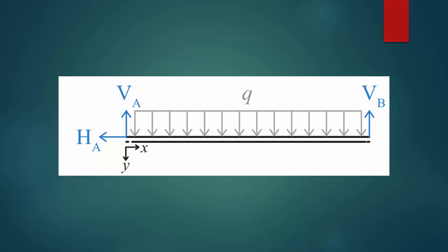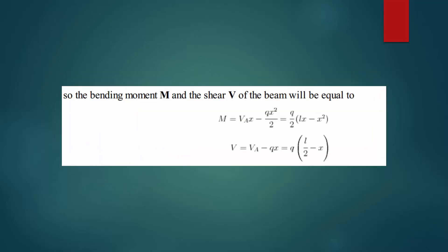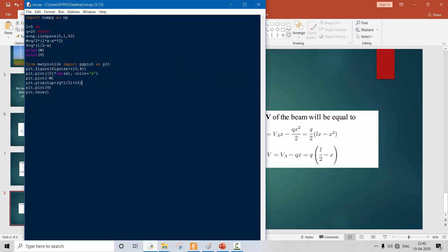To draw the bending moment and shear force diagrams, we need to find values at each point. The shear force equation is V equals VA minus Q*x, which gives V equals QL/2 minus Q*x. The bending moment equation is M equals (Q/2)*(L*x minus x squared).